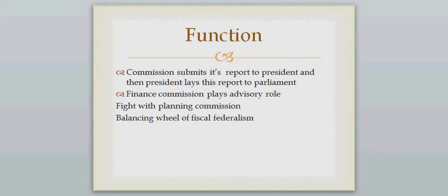There is a conflict between the Finance Commission and the Planning Commission, because the Planning Commission does the same job as the Finance Commission. The government tends to accept the recommendations of the Planning Commission instead, even though the Planning Commission is not a constitutional or statutory body. The Constitution describes the Finance Commission as the 'balancing wheel of fiscal federalism,' but in reality it was not quite applicable. Now, since the Planning Commission has been abolished, the Finance Commission members may be happier with the Modi government's decision. Thanks for watching, and I will meet you in my next video.